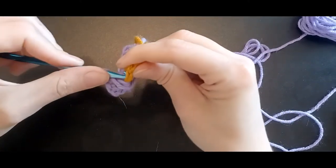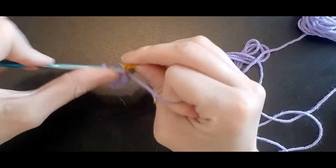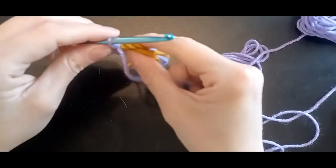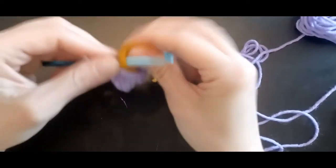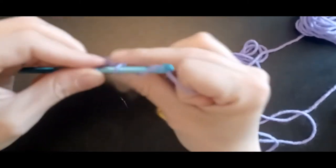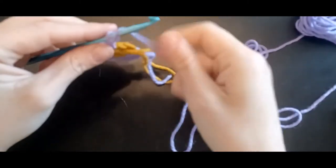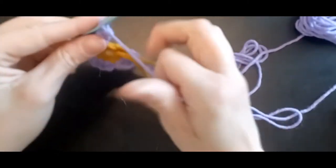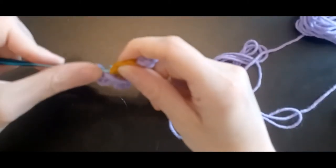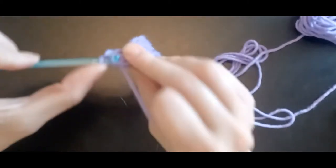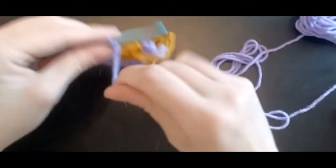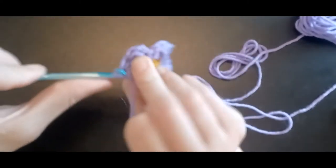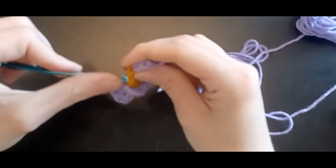And chain two and two doubles into that same space. And yarn over, half double in the next, right through all three. Slip into the next and chain two and two double crochets. And half double into the next, and slip over.